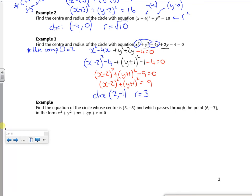Right, so this is the second video for the first lesson, and we're done after this actually. We've got consolidation questions in class. It says find the equation of a circle whose centre is (3, -5) and which passes through the point (6, -7).